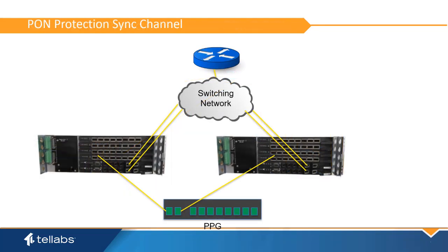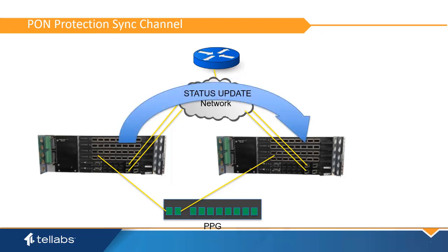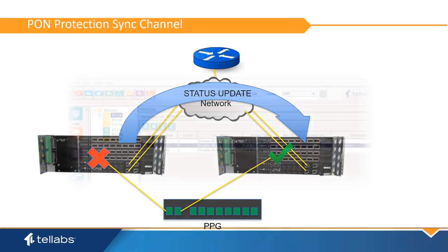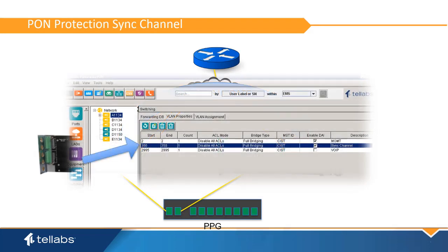When configuring inter-OLT Protection, you are required to enter a Sync Channel VLAN. This VLAN allows the two sides to exchange synchronization and state information to speed up the protection switching when a failure occurs. The Sync Channel VLAN must be configured and uplink mapped on both OLTs.